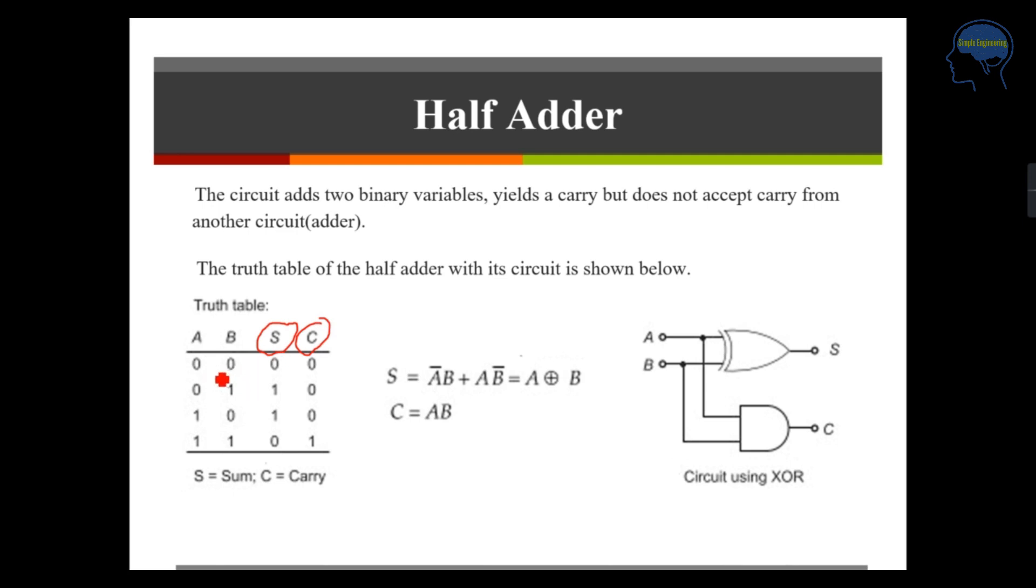Sum of two bits, 0 and 0, sum is 0 and carry is 0. If your inputs are 0 and 1, 0 plus 1 is 1 and carry is 0. If your inputs are 1 and 0, 1 plus 0 is 1 and your carry is 0. And if your two inputs are 1, in a binary variable, 1 plus 1 is 10 which means your sum is 0 and you have a carry of 1.